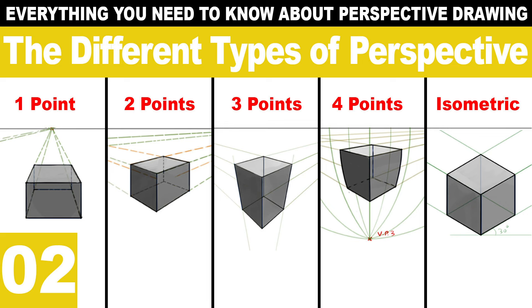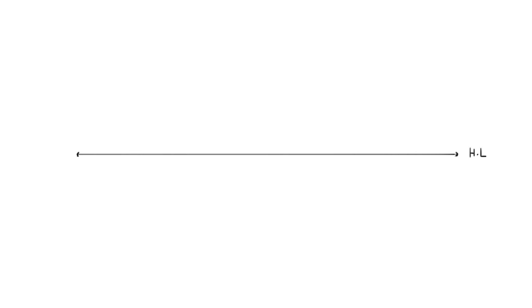The first type of perspective drawing is one-point perspective. This is the easiest to work with, as you only have to deal with one vanishing point. To draw this, you need to first establish the horizon line, which can be placed anywhere for now. We will later discuss different heights of the horizon line in a different lesson. Next, we add the vanishing point. In one-point perspective, we only have one vanishing point, which doesn't have to be in the center.